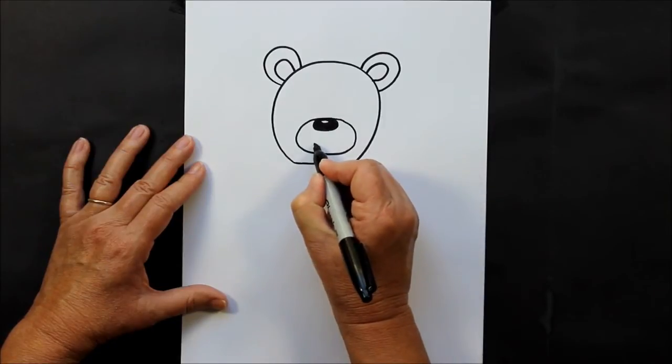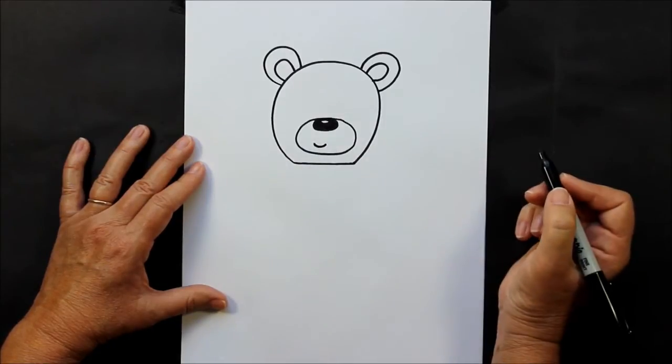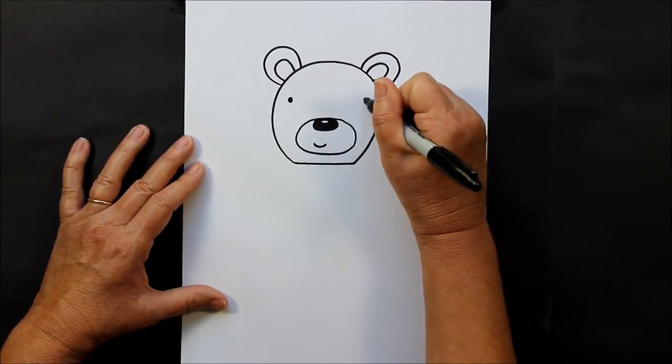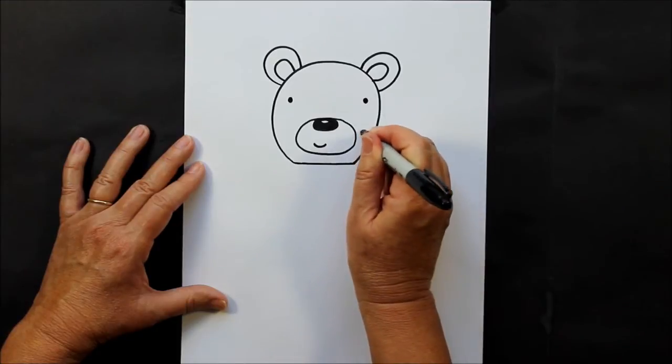And then you can make a little smile for a happy bear. Let's make some wide set eyes and some little dots for his cheek area.